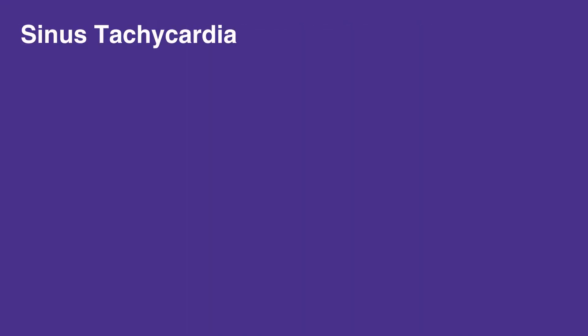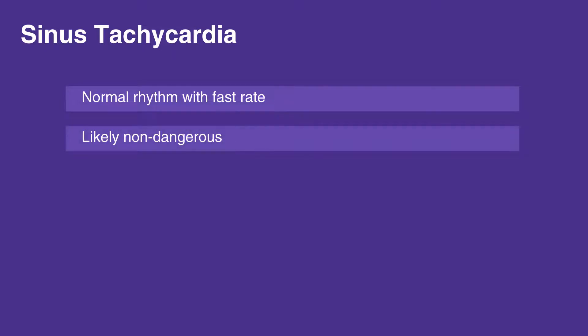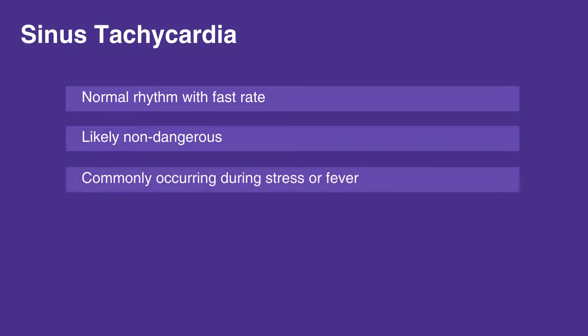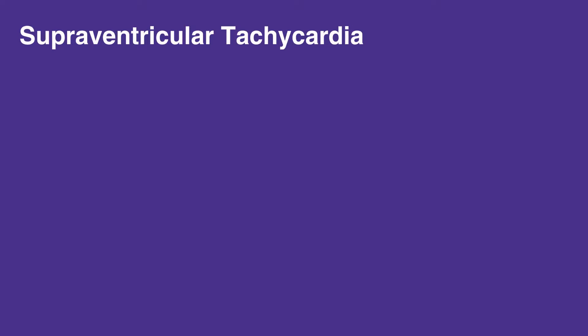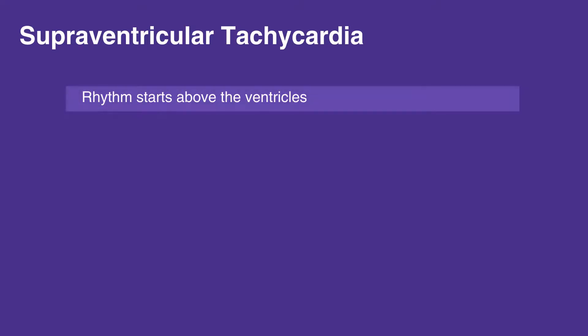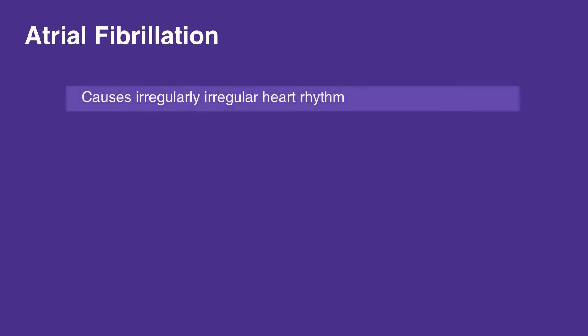Sinus tachycardia — normal rhythm with a fast rate — is likely non-dangerous and commonly occurs during stress or fever. Supraventricular tachycardia is a rhythm that starts above the ventricles. Atrial fibrillation causes an irregularly irregular heart rhythm.